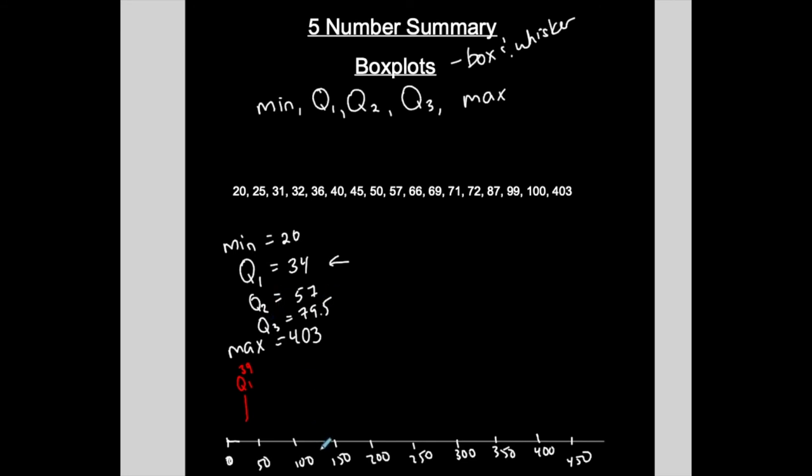The end of my box is Q3, 79.5 which is actually not too far from there. 79.5. This is Q3. So the start of my box from a box and whisker plot and the end of my box is Q1 and Q3. So I'm going to close my box.